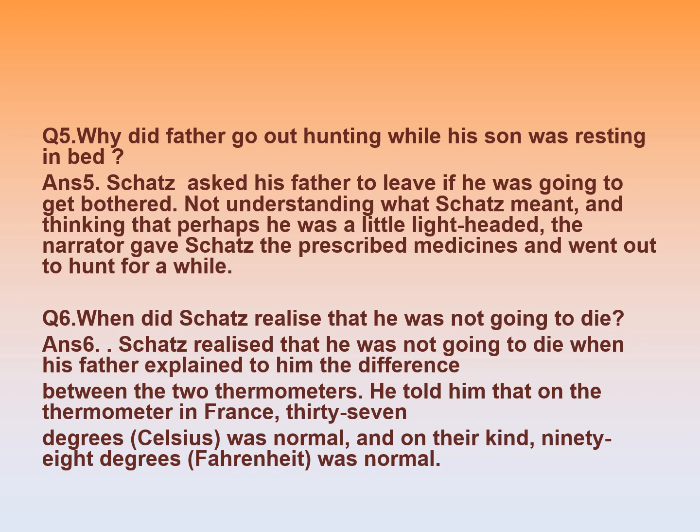Question 6: When did Skatz realize that he was not going to die? Skatz realized that he was not going to die when his father explained to him the difference between the two thermometers. He told him that on the thermometer in France, 37 degrees Celsius was normal, and on their kind — that is Fahrenheit — 98 degrees was normal.